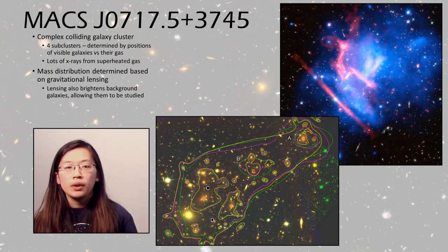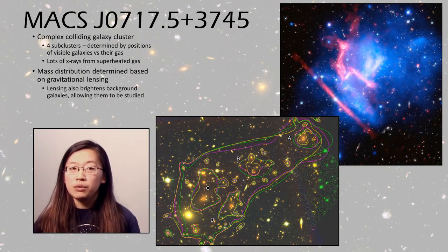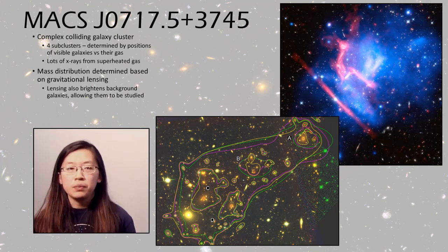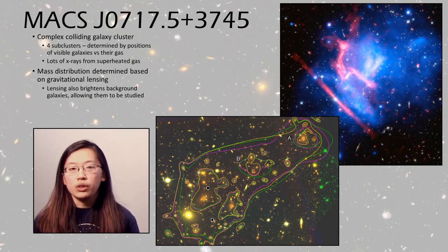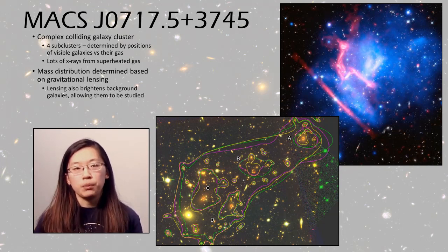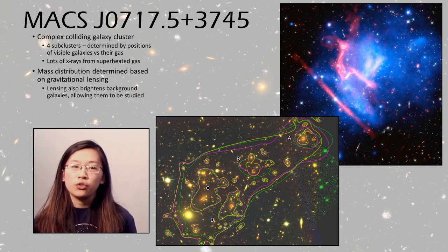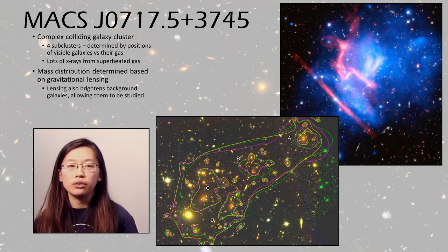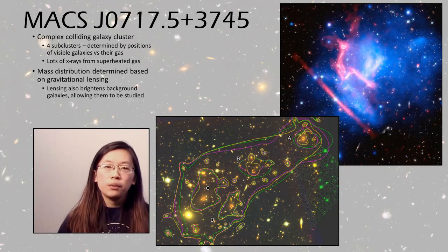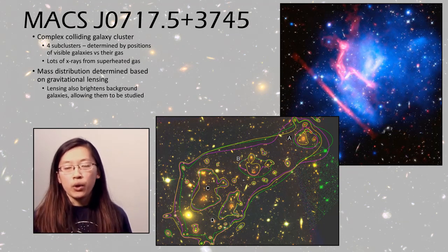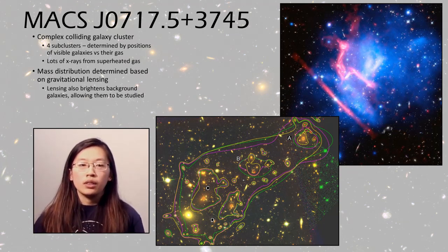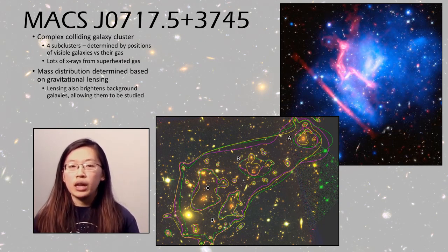Our next DSO is MACS J0717, a very complex colliding cluster. Astronomers have determined there are four sub-clusters based on the positions of the galaxies versus where their gas is, since gas will collide while stars generally pass through each other. As such, there's a lot of X-ray emission from all the superheated colliding gas. We've also been able to determine the mass distribution of this cluster from how it lenses the galaxies behind it, and this lensing also brightens those background galaxies, allowing them to be studied as well.